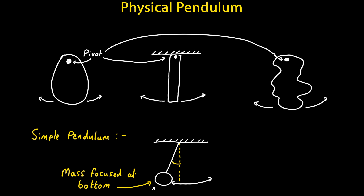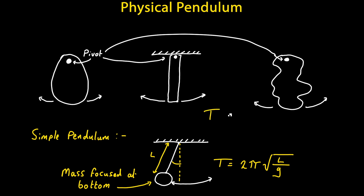So if we want to find the period, we can't simply use the equation for a simple pendulum, which is T is equal to two pi multiplied by the square root of the length of the pendulum divided by the gravitational acceleration. Instead, we need to use this equation where the period T is equal to two pi multiplied by the square root of the moment of inertia divided by the mass of the pendulum, the gravitational acceleration, and the distance from the axis of the pendulum to the pendulum's center of mass.